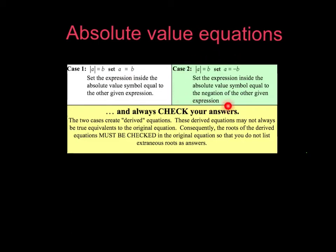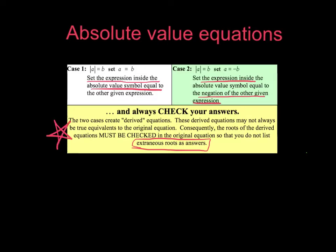In case two, notice we're setting the expression inside the absolute value equal to the negation of the other expression. We always have to make sure we write two equations. Third, we have to make sure we check our answers, because often we're going to have extraneous roots. We're going to set our expression equal to the other expression, set it equal to the negation, and then check.